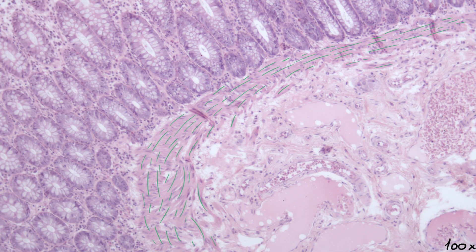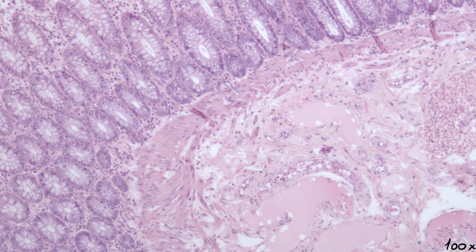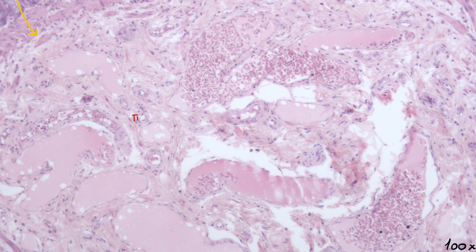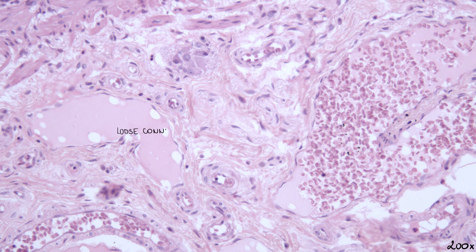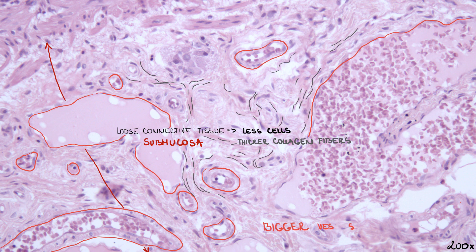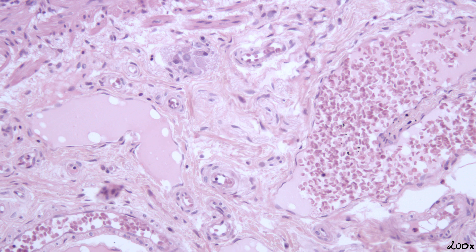The third layer of the mucosa is the muscularis mucosae, which is made of smooth muscle cells. The next layer, located under the mucosa, is called the submucosa. Submucosa is made of loose connective tissue, just like lamina propria, but it contains fewer cells. On the other hand, it has thicker collagen fibers and larger vessels. One important structure to remember is that it contains a nerve plexus called the submucosal, or Meissner's plexus.